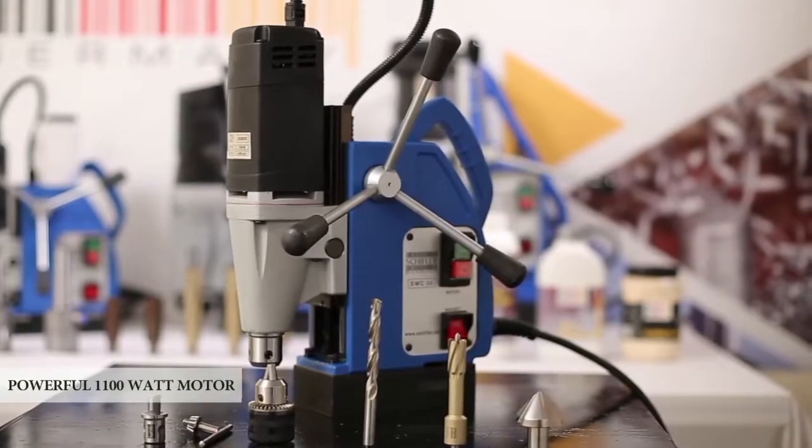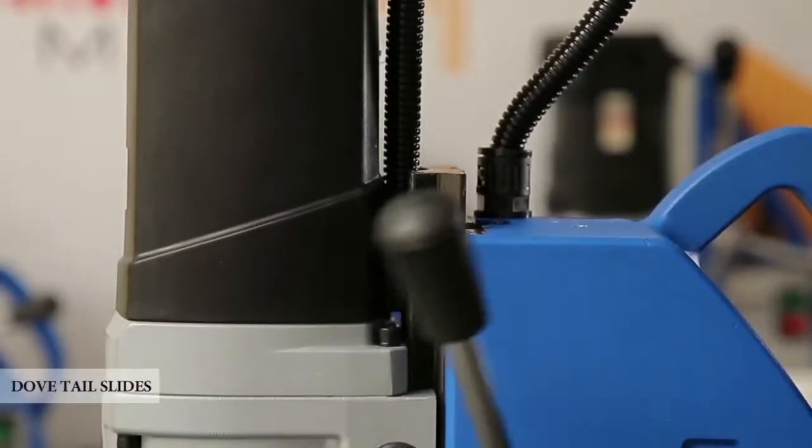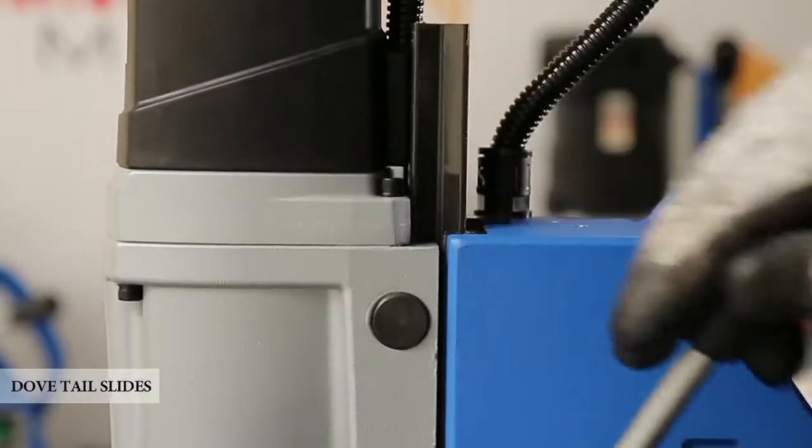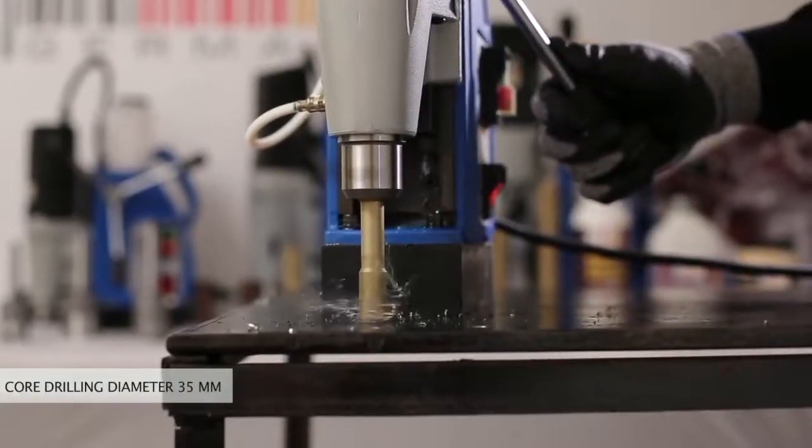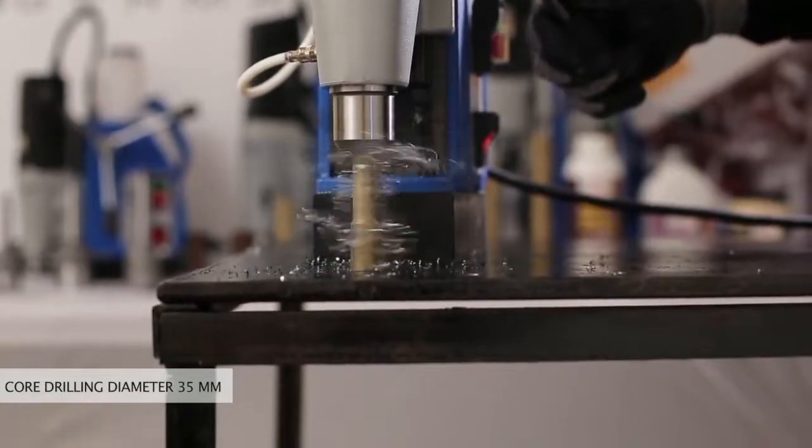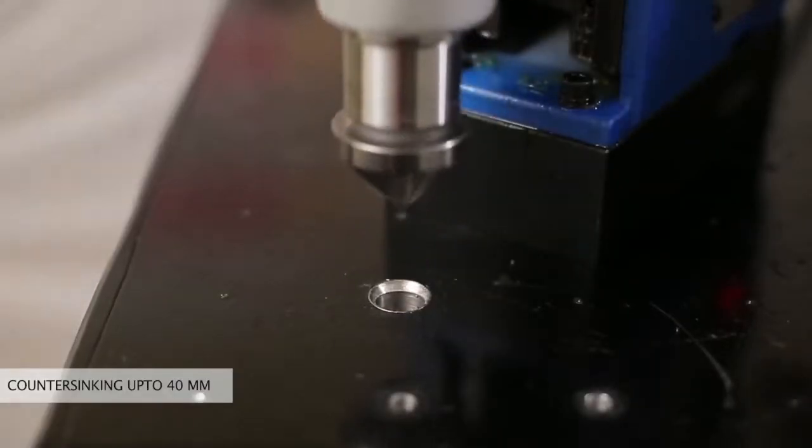Powerful 1100 watt motor, dovetail slides for precise and smooth movement of slides during operations. Twist drilling up to 13mm, core drilling diameter 35mm up to 50mm cutting depth, countersinking up to 40mm.